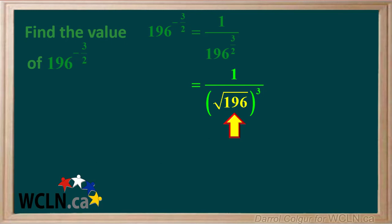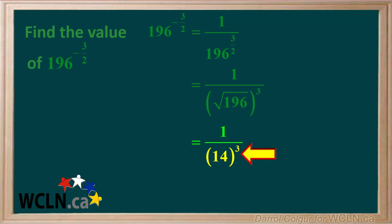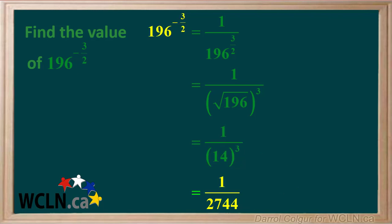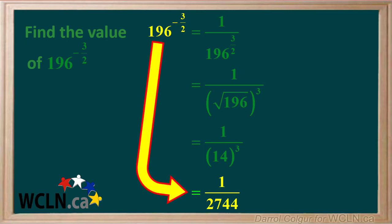Recall that the square root of 196 is 14, so we can replace the square root of 196 by 14. Now we just have to calculate the value of 14 cubed, which we can do on a calculator, and it comes out to 2744. So the value of 196 to the power of negative 3 over 2 is equal to 1 over 2744.